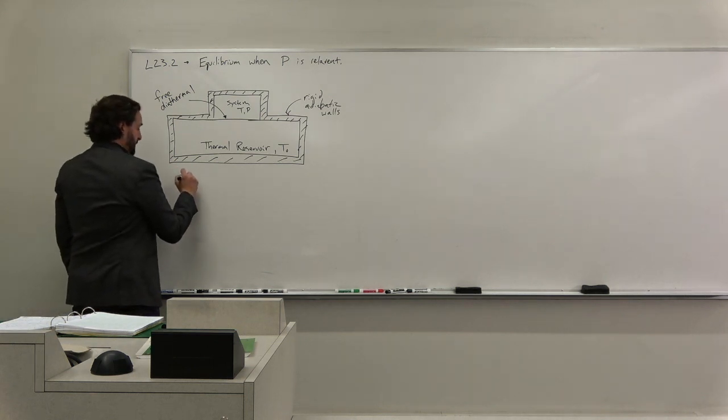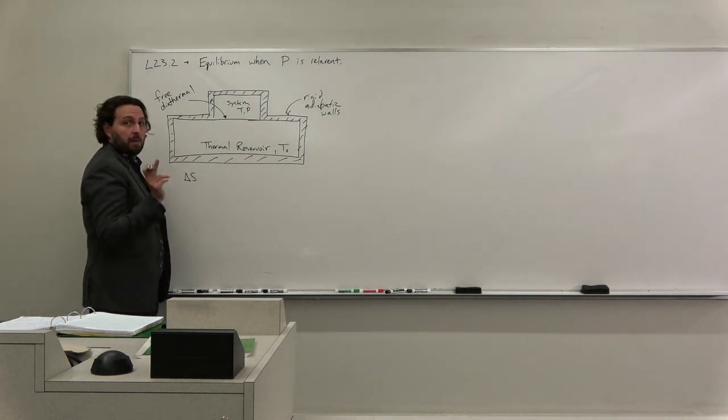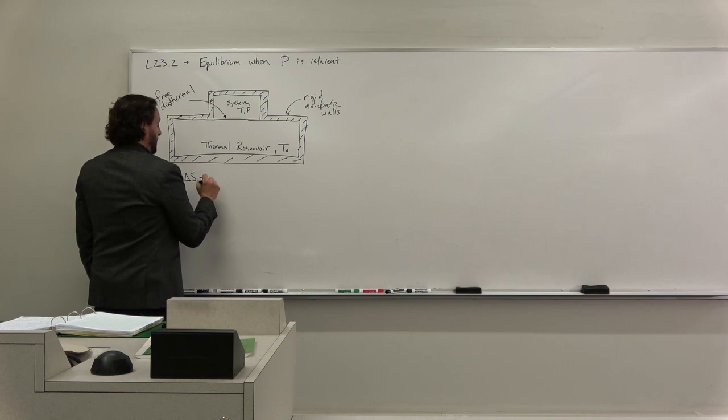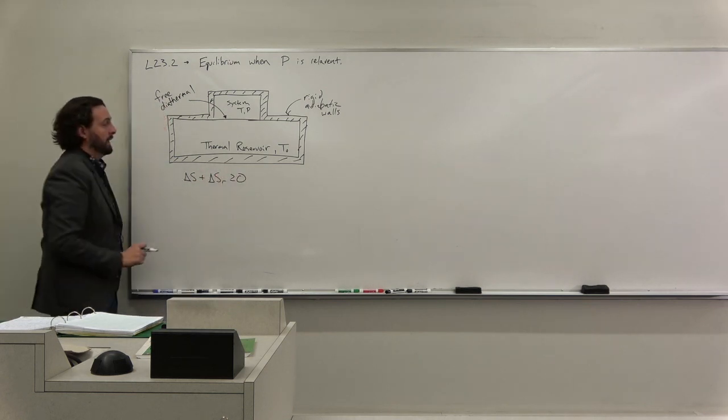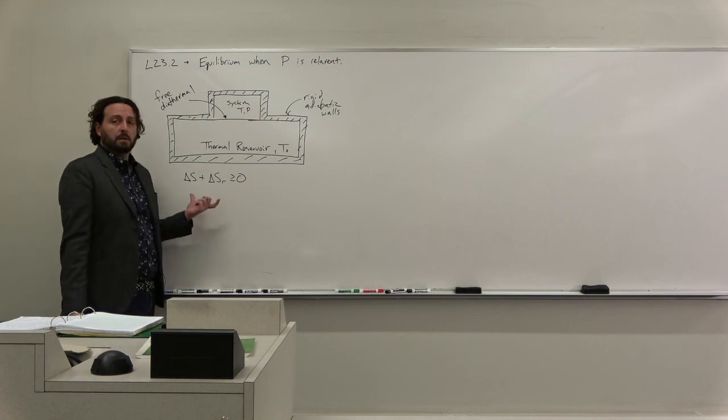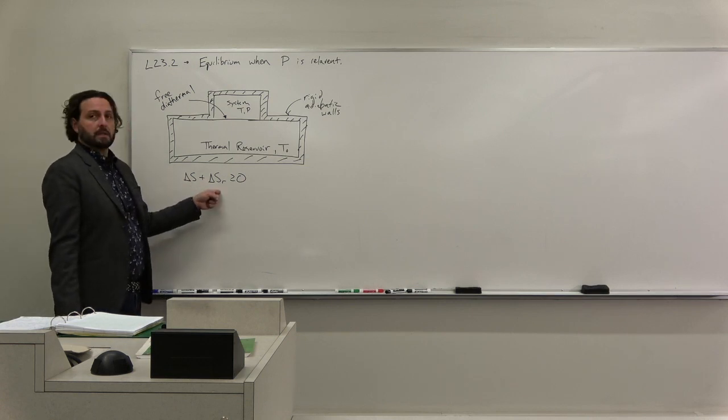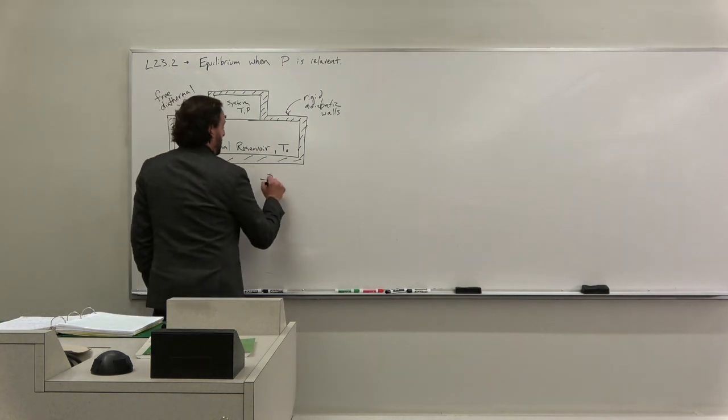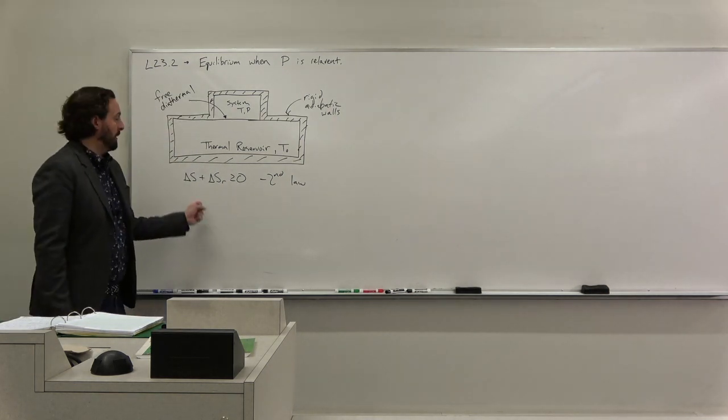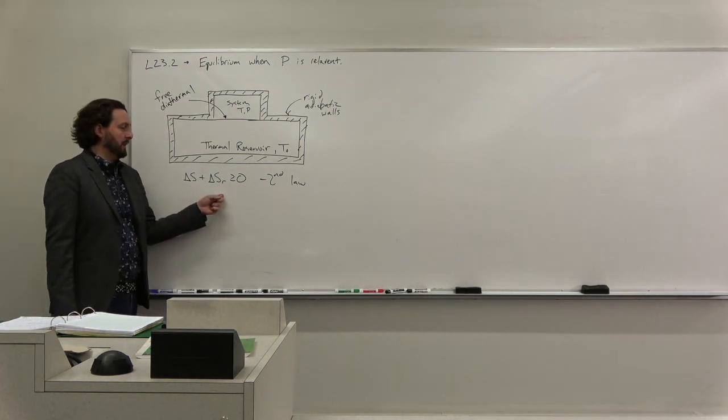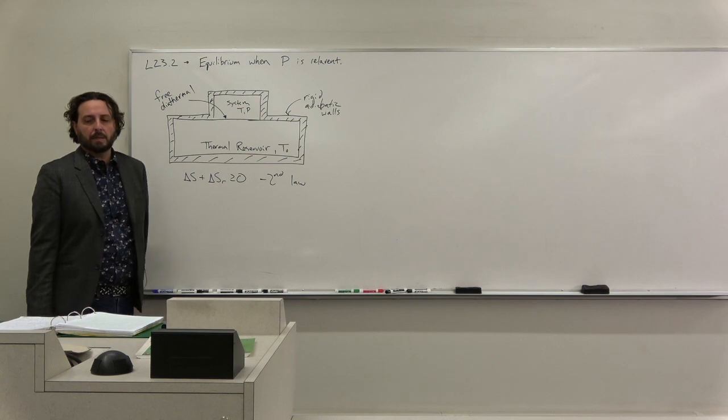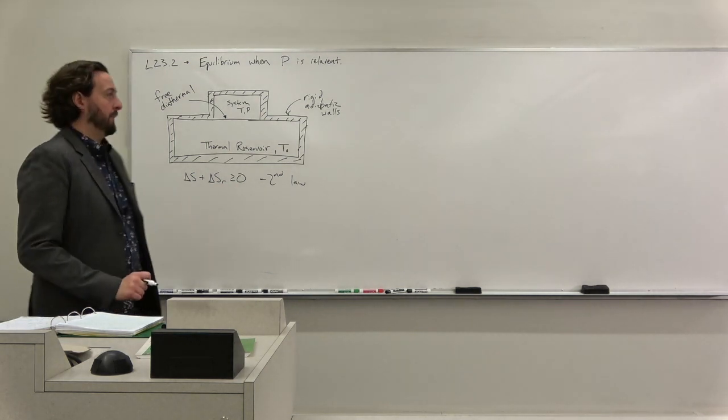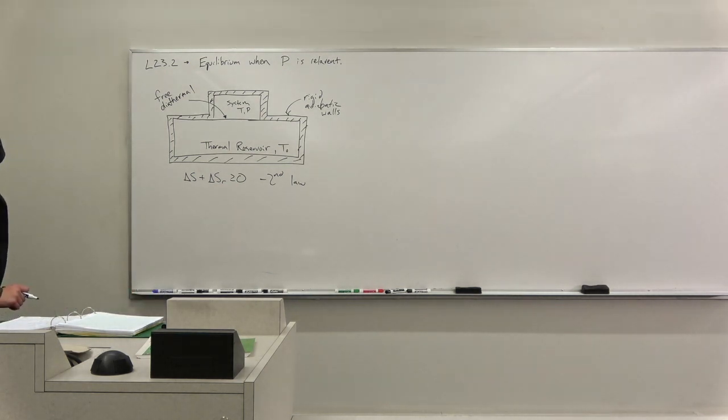Just like before, we can always invoke the second law, and here for the second law, we can now take as our whole world our system plus our reservoir. So that must always go up, because we're always going to be maximizing our entropy in any process, and the only time it's zero is when it's at equilibrium or we're doing an isolated reversible process.